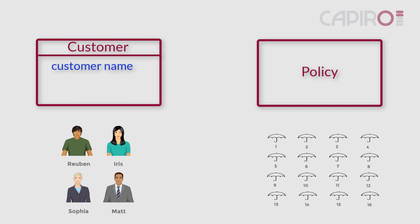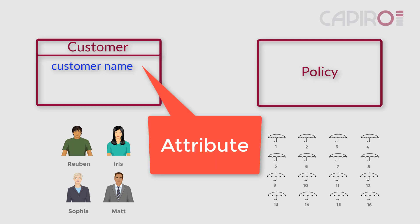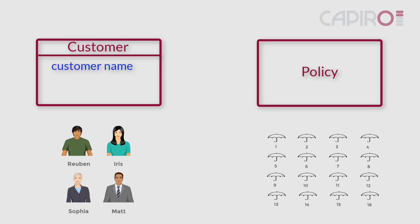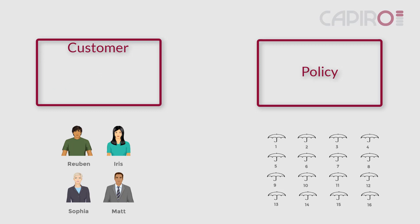Theo adds that every customer has a customer name. In data modeling, we say that customer name is an attribute of customer. Note that the model just says 'customer name,' not the customer's actual name. Customers have other attributes, including status and postcode. All customers will have these same types of attribute. At the moment, the attributes are cluttering our diagram, and so we'll hide them.